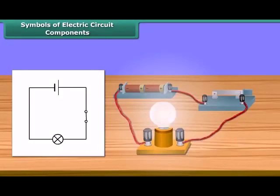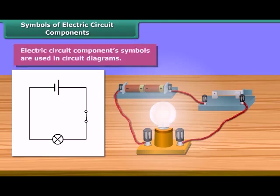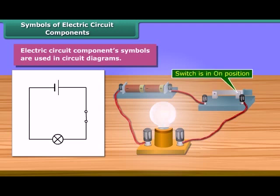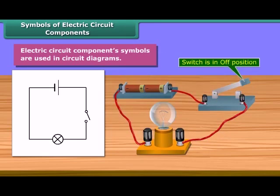Electric circuit component symbols are used to make circuit diagrams. It is much easier to represent a circuit diagram using symbols. This is the symbol of a switch in the on position; this one is in the off position.